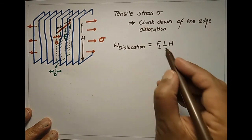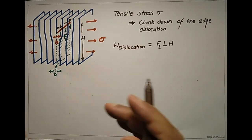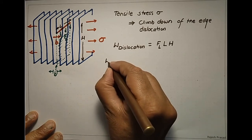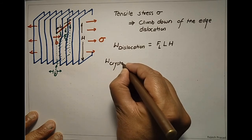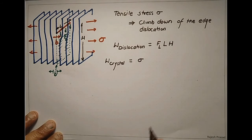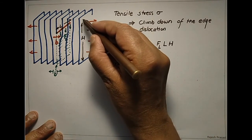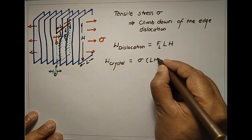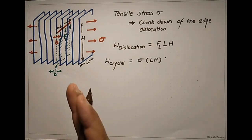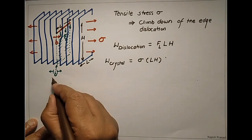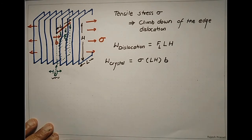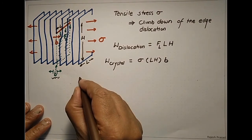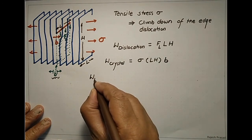Now we will equate this work done to calculate FL. We will equate this work done to the work done by the external stress. The external stress in this case is the tensile stress. The work done on the crystal due to the tensile stress is tensile stress — force per unit area — times the area. The tensile stress is acting over an area L · H, and the displacement of the crystal due to this force is B, the Burgers vector. So the work done by the tensile stress is σ · L · H · B.